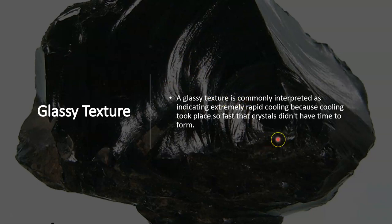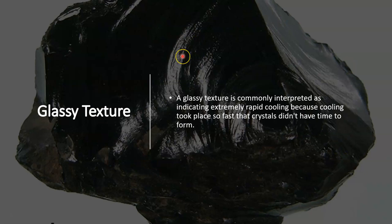This is obsidian, and it is made of basically all glass — it is volcanic glass. A lot of it is fairly silica-rich, so if you have a very small piece it's almost translucent. These do come out of volcanoes and would not form underground in a pluton.